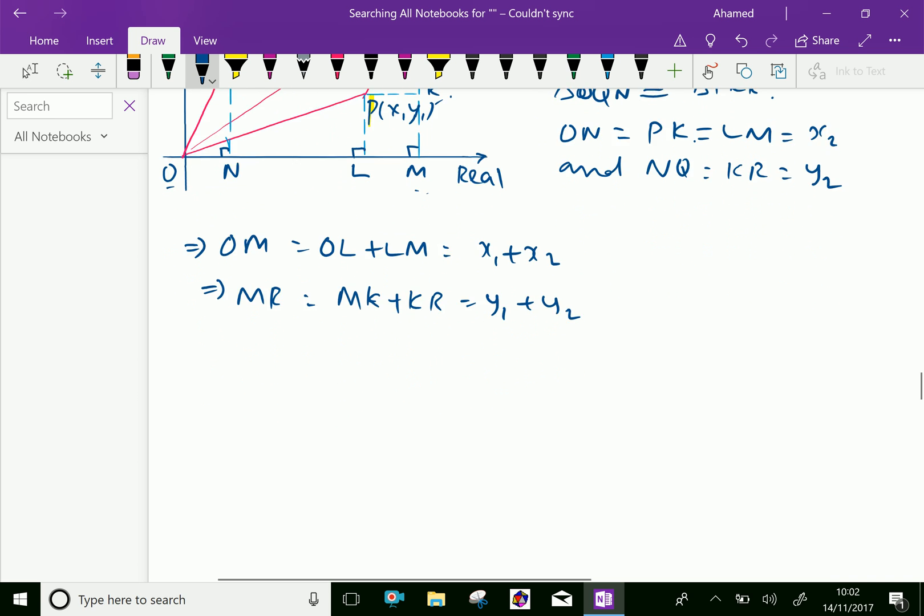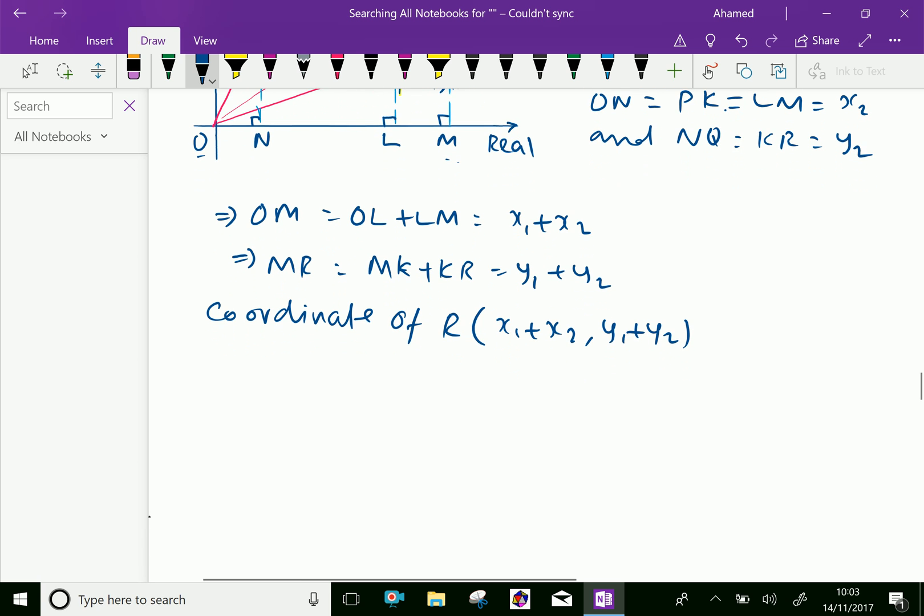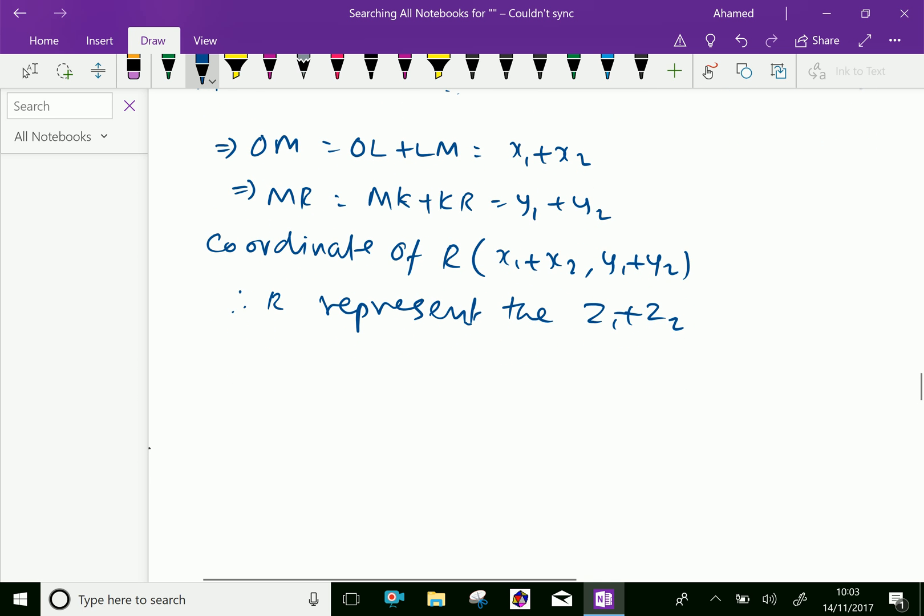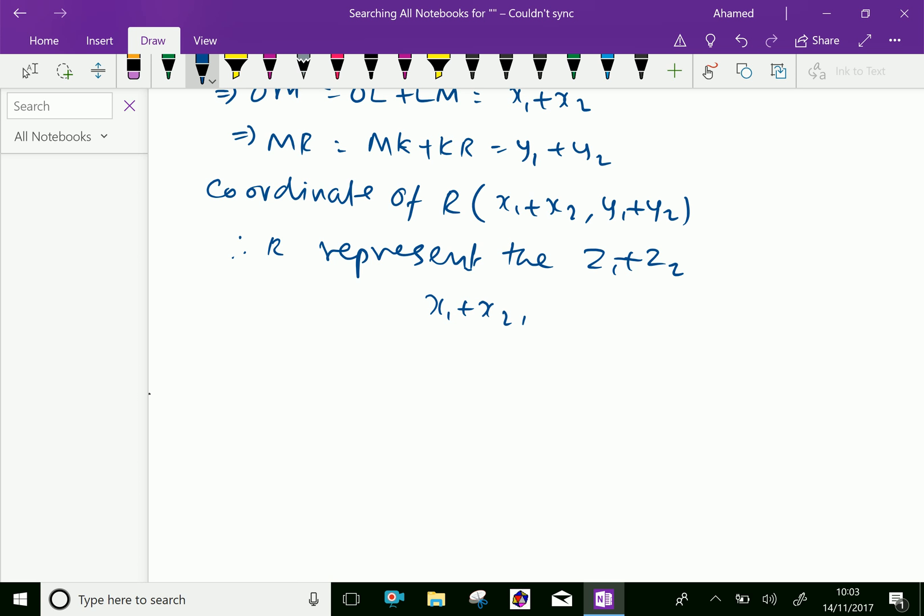Therefore, the coordinate of point R is (x₁ + x₂, y₁ + y₂). Hence, the point R represents the sum z₁ + z₂, which equals (x₁ + x₂) + (y₁ + y₂)i.